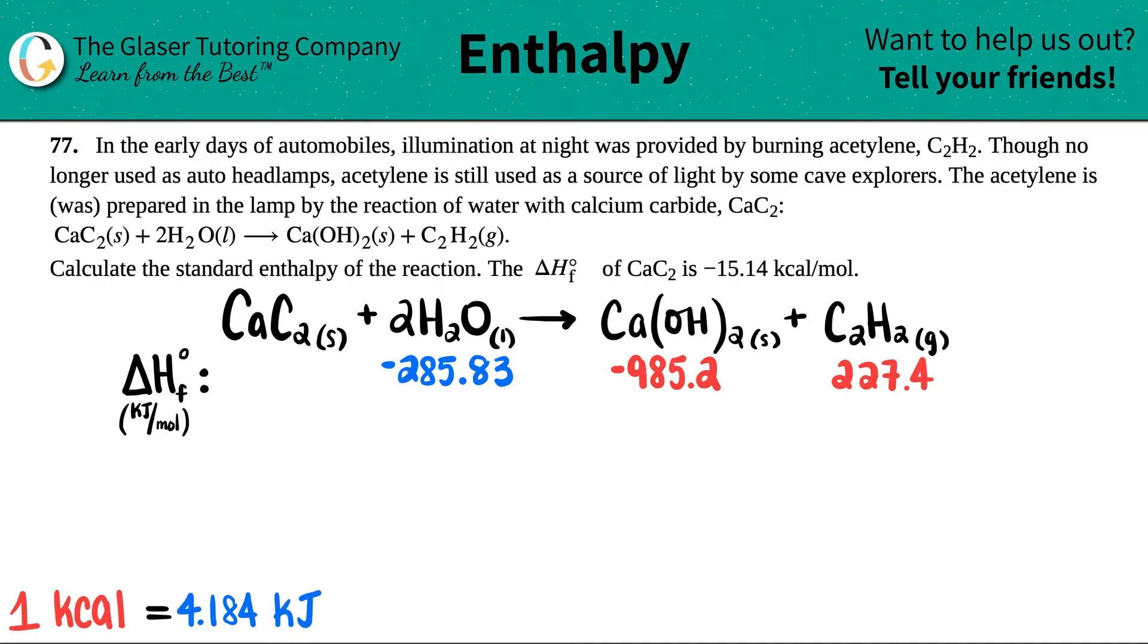We want to know, or the question is asking for, calculate the standard enthalpy of the reaction. And then they give us the delta H of the CAC2 is negative 15.4 kilocalories per mole. So a couple of things here. They want the standard enthalpy.